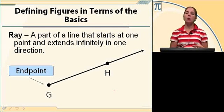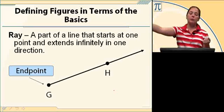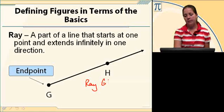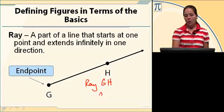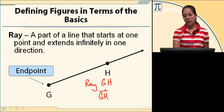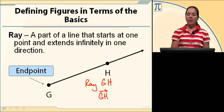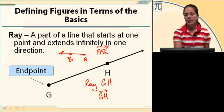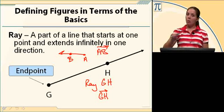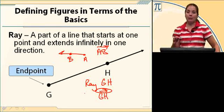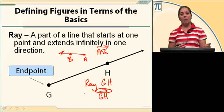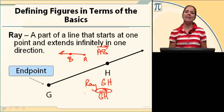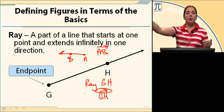A ray is also a portion of a line, only this time we have one endpoint and it goes forever in one direction. This ray is ray GH. When you name the ray, you can write out the word ray, then the endpoint, then the other point. Or use two points with a single-headed arrow over the top. The arrow always points to the right, no matter what direction your ray is going in. If I have ray AB, I name it endpoint first and then the other point — arrow always goes to the right. So the arrow is not telling you what direction the ray is going in the picture; it's telling you that G is the endpoint, go in the direction of H.